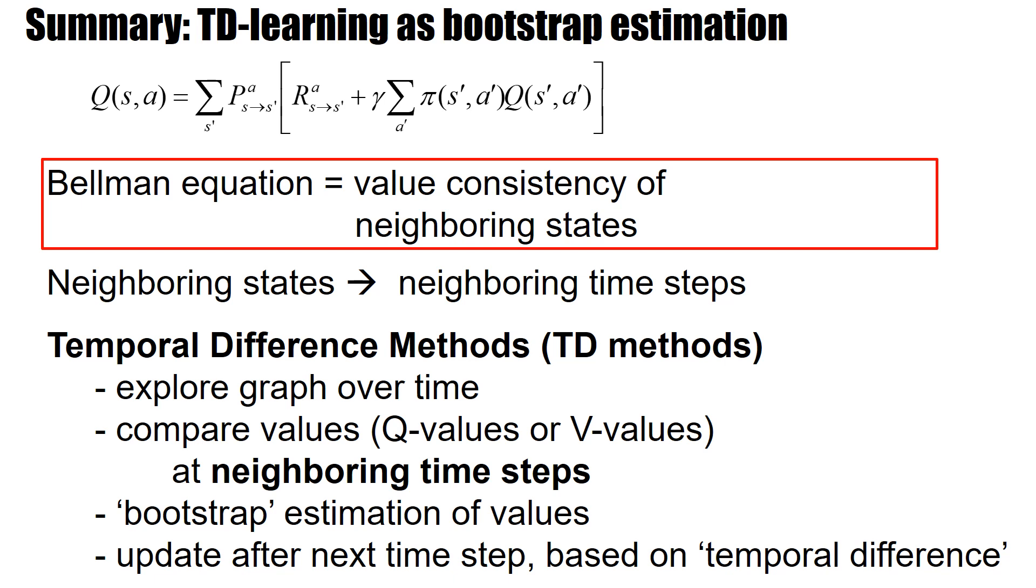To summarize, the Bellman equation is a consistency equation for neighboring states. Neighboring states turn into neighboring time steps, and that gives rise to a temporal difference. And in a large class of algorithms called temporal difference methods, we explore the graph over time. Then we compare values, Q values or V values, at neighboring time steps. And these V values in the next time step are seen as compact summary of experiences that have been made in the past. And in that sense, they are called bootstrap algorithms. And the update is always possible after next time step, and it's based on temporal differences, and therefore the name temporal difference algorithms.